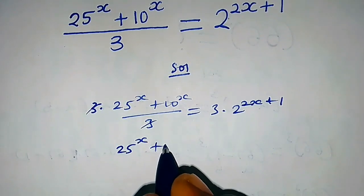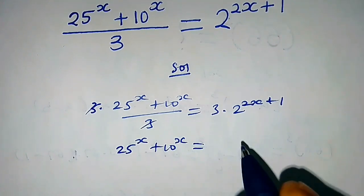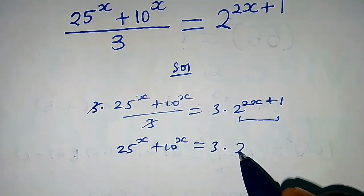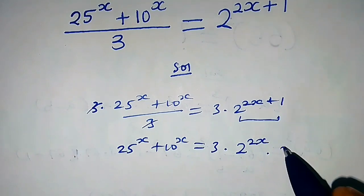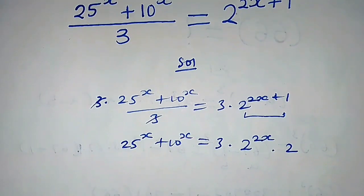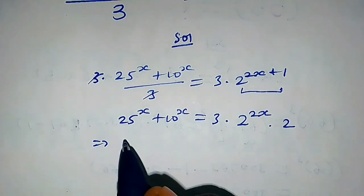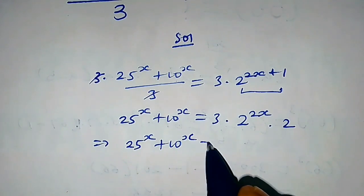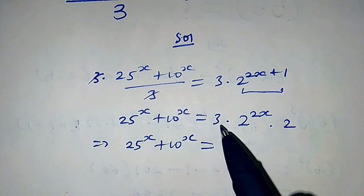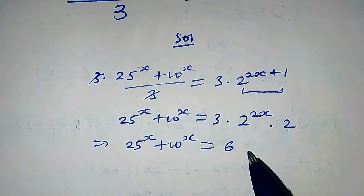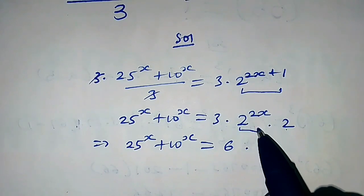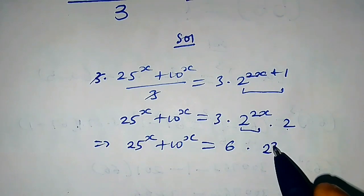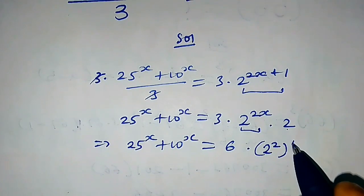This gives us 25 raised to the power x plus 10 raised to the power x equals 3 times — we can write this as 2 raised to the power 2x times 2, by the laws of indices. This implies 25 raised to the power x plus 10 raised to the power x equals 3 times 2, that is 6, times 2 squared to the power x.